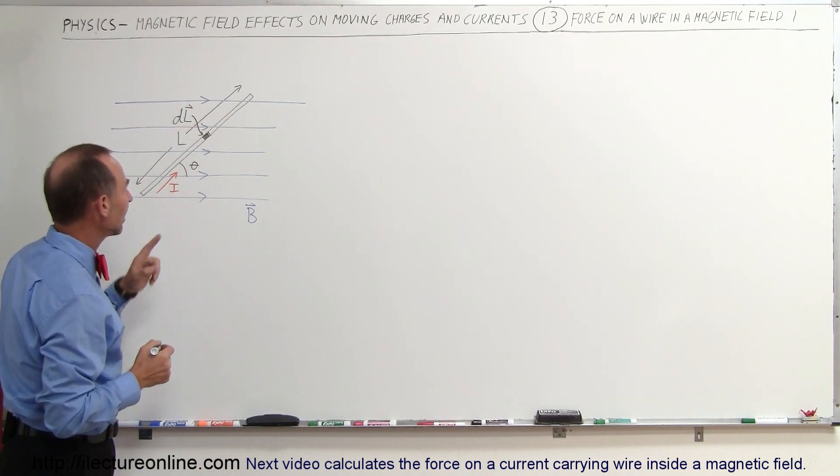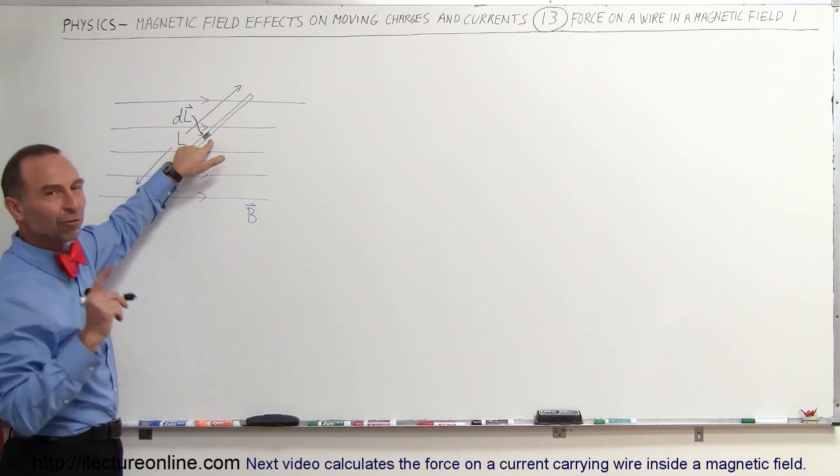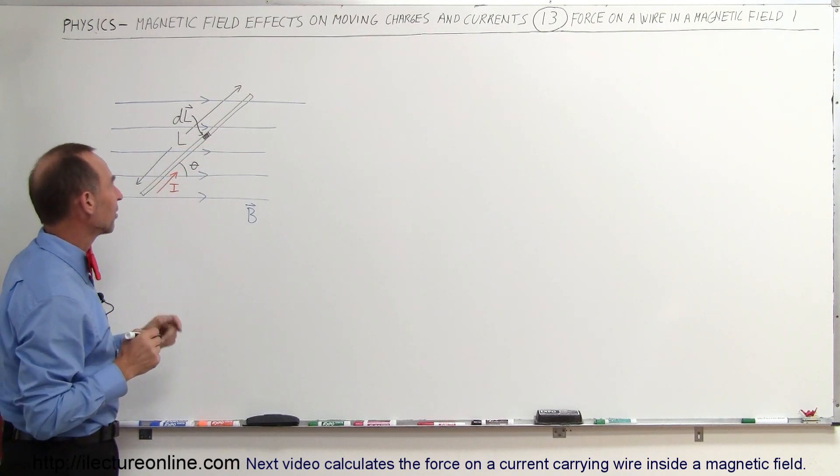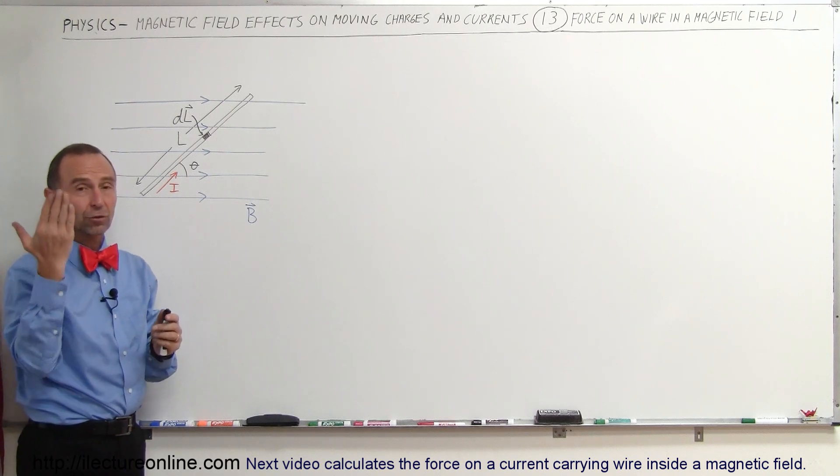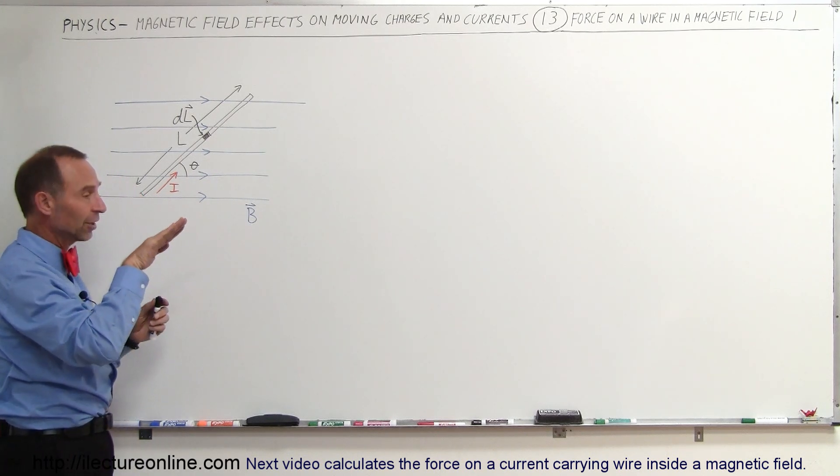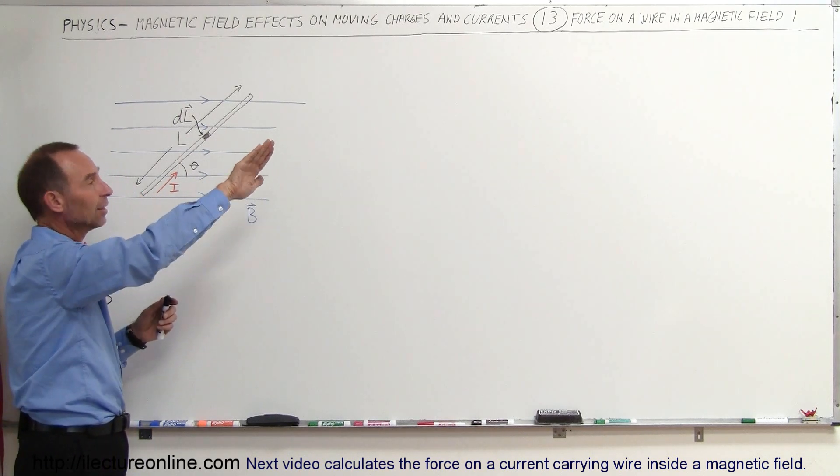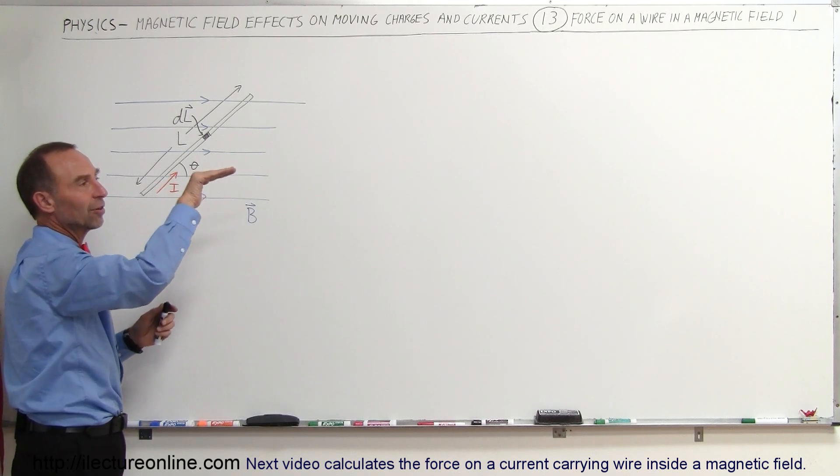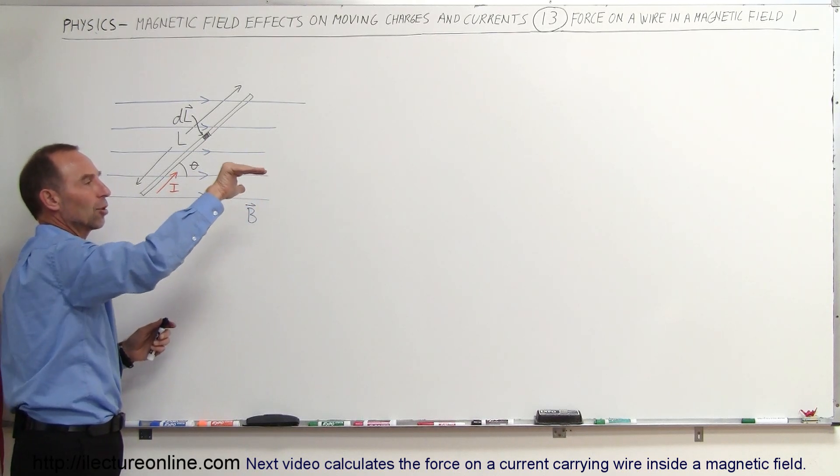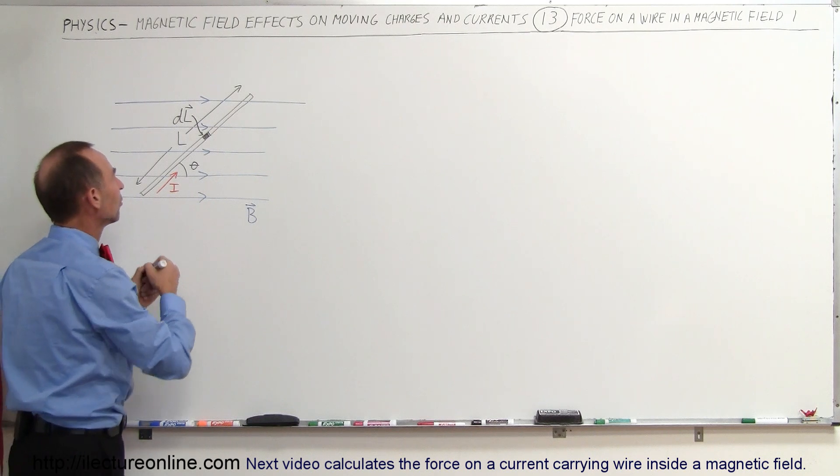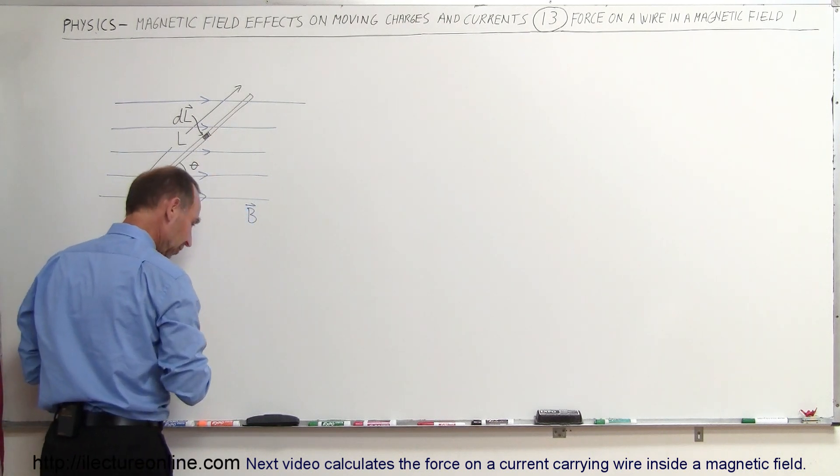And so we're going to calculate the force on the small line segment. How do we calculate the direction of the force? We'll use your right-hand rule: you point your fingers in the direction of the current, then you curl your fingers in the direction of the B field, which is from left to right, and your thumb points into the board.